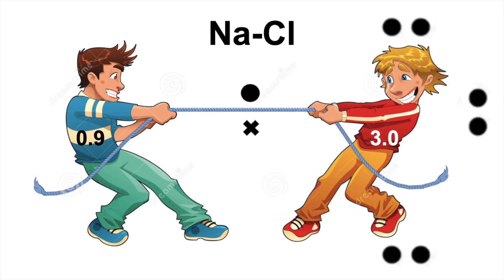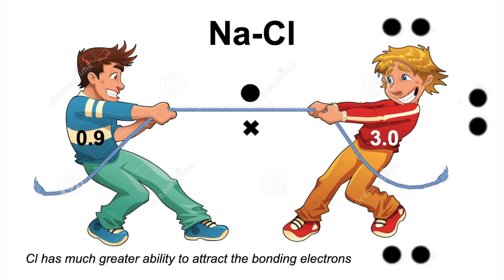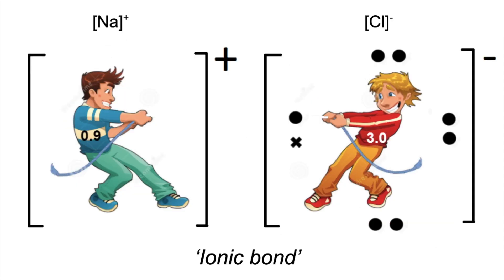Moving on to sodium chloride — which we know isn't covalent, but I'm representing it as if it is for now. The electronegativity value for sodium is 0.9 and for chlorine it's 3.0. Basically, chlorine has a much greater ability to attract the bonding electrons than sodium. Using the tug-of-war analogy, the upshot is chlorine takes control of that pair of electrons — it gains an electron and picks up a negative charge, while sodium loses an electron and becomes positively charged. They become ions and attract each other electrostatically — this is an ionic bond, because the difference in electronegativity is quite large.